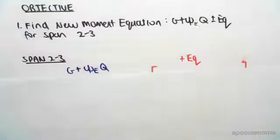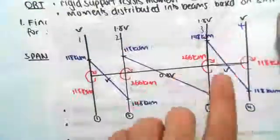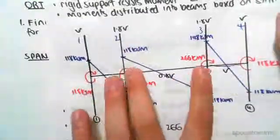The procedure is the exact same for spans 1 to 2 and 3 to 4. Just to remind you of the spans, in the previous videos we've defined 1, 2, 3, and 4, so span 2 to 3 is that span over there.